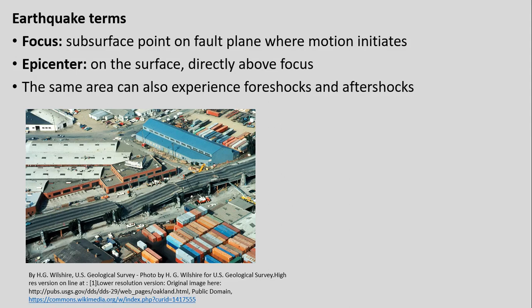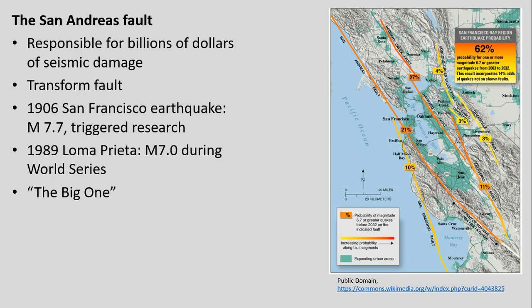The Loma Prieta earthquake occurred in 1989 in the Bay Area and caused widespread damage. It was famously known for interrupting the beginning of a World Series baseball game. This occurred along the San Andreas Fault — actually a transform fault, where two plates are sliding past each other, broken up into a series of pieces. Over Euro-American settlement of the past 150 years or so, the San Andreas Fault has been responsible for billions of dollars of seismic damage. The most famous earthquake tied to it was the 1906 San Francisco earthquake, a magnitude 7.7.